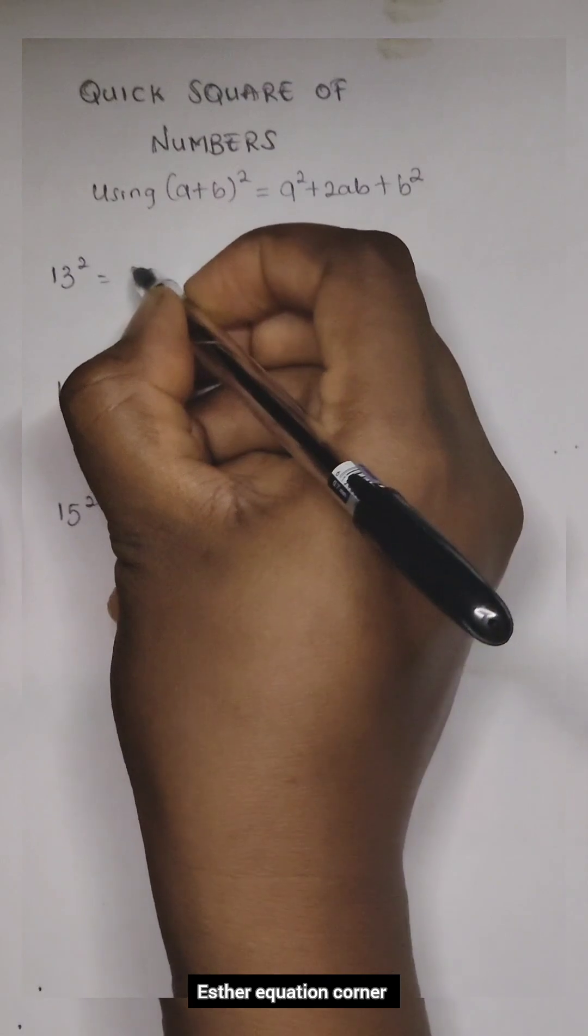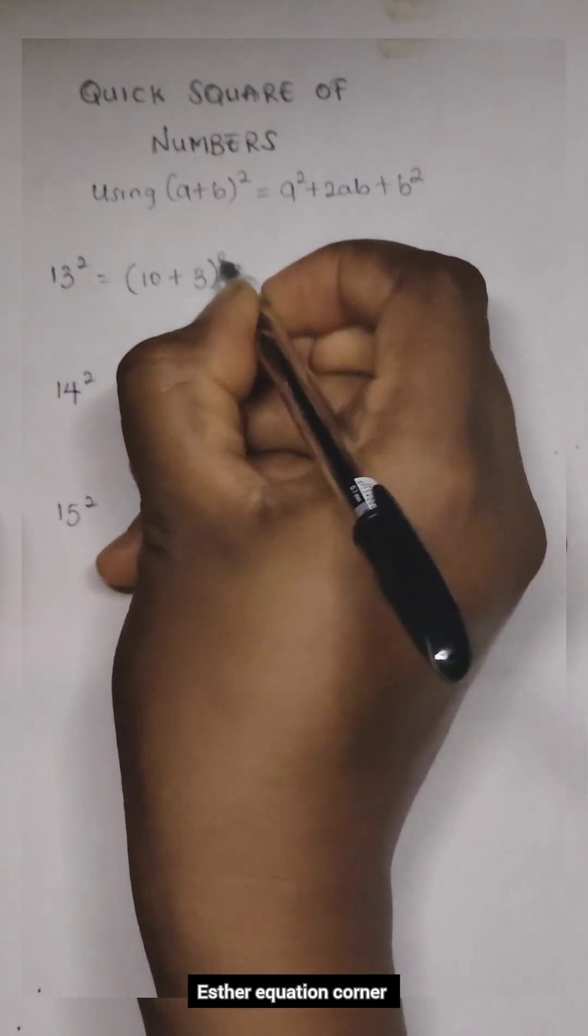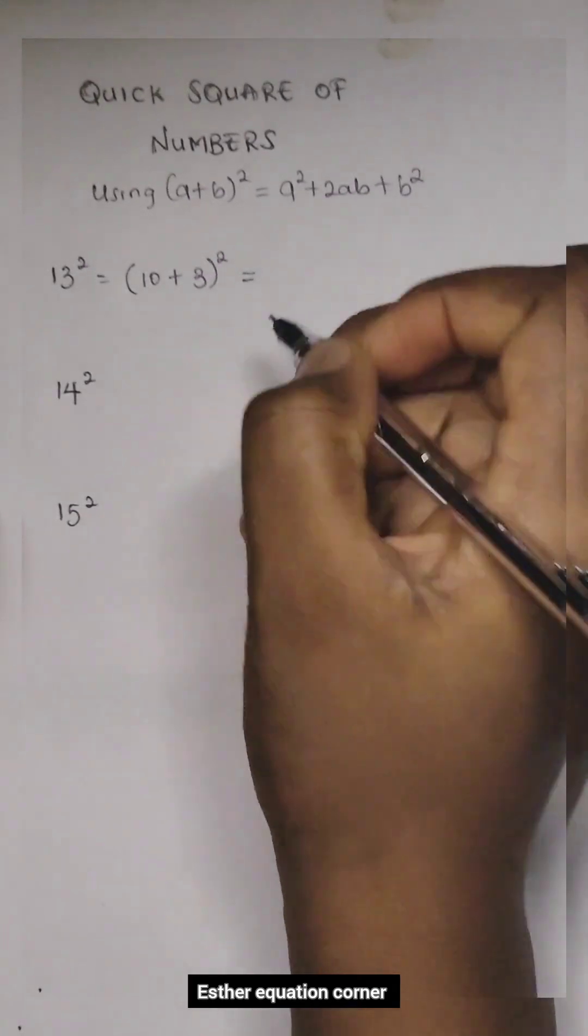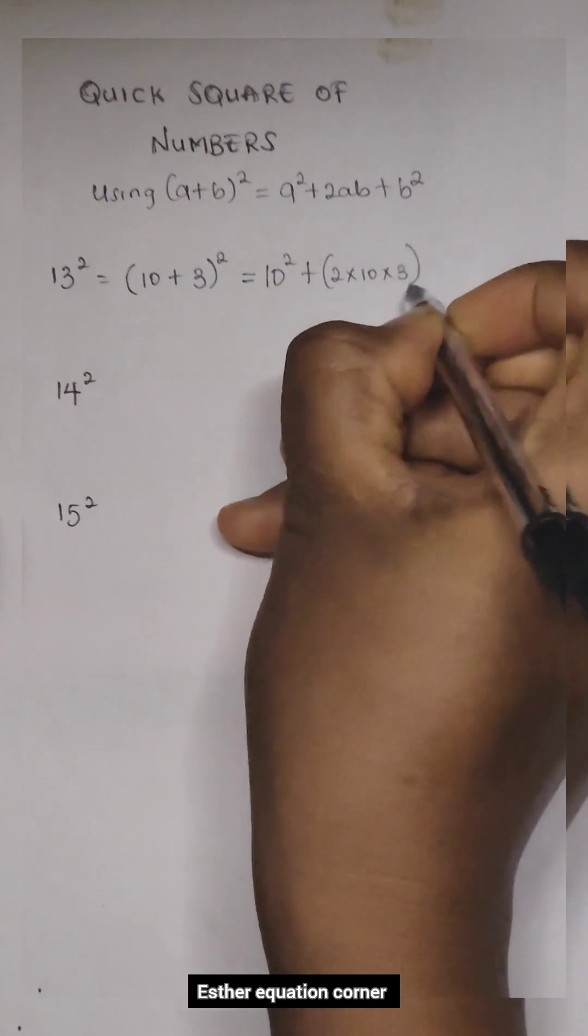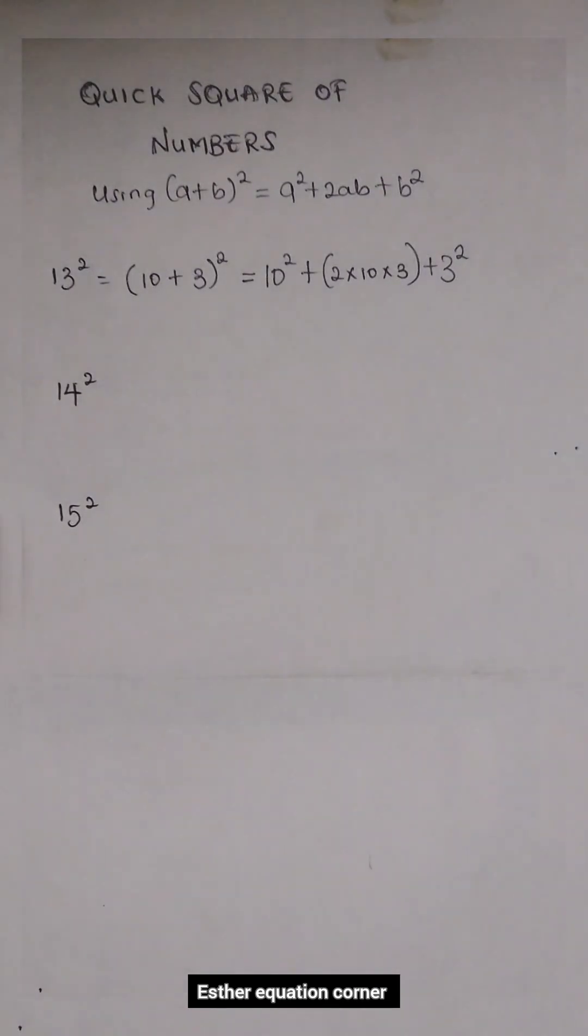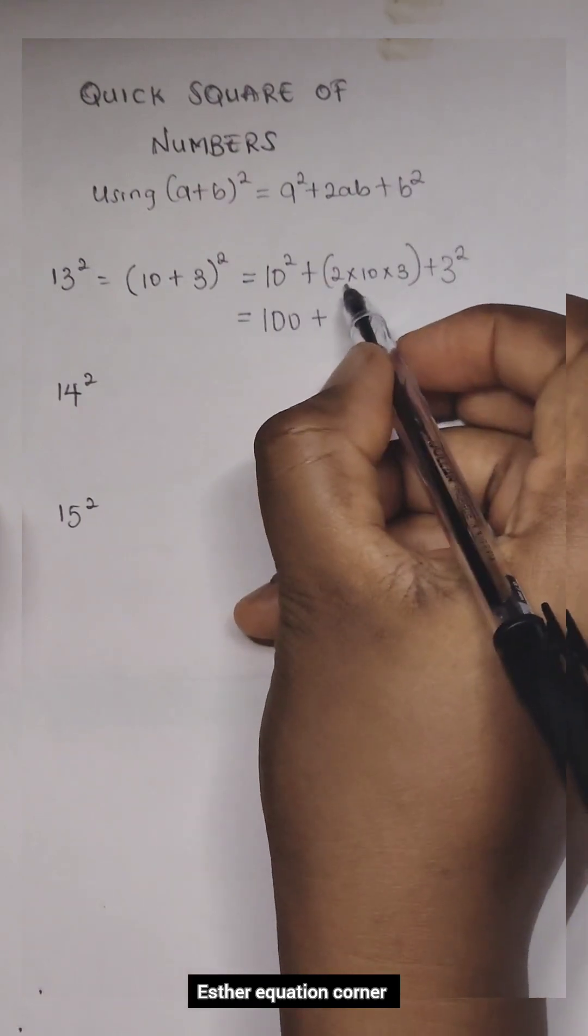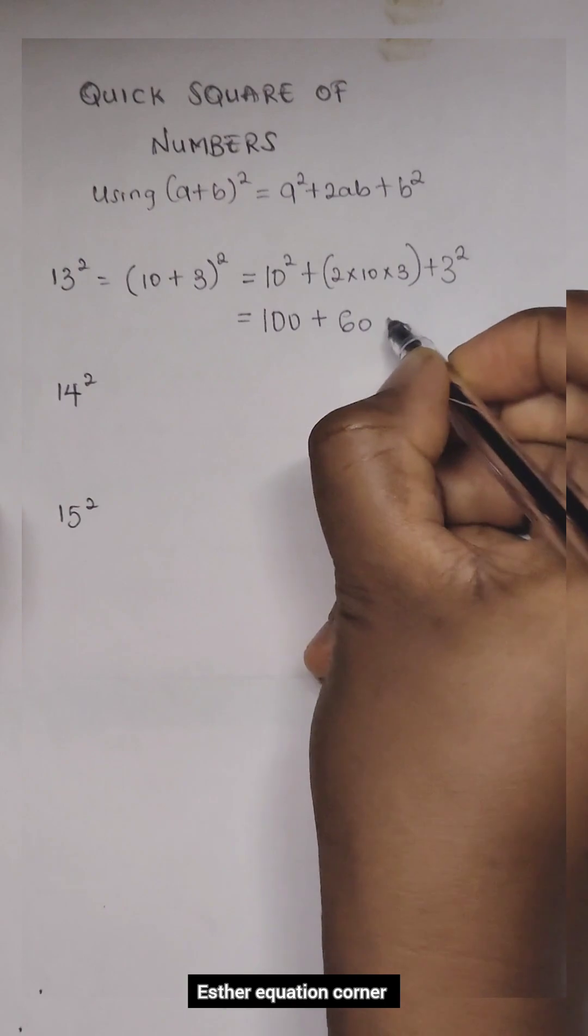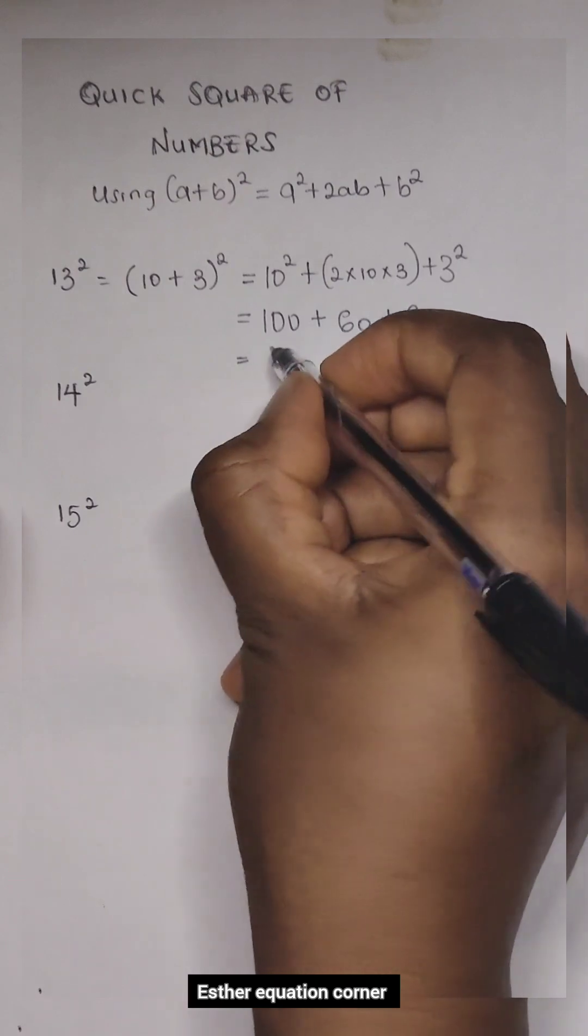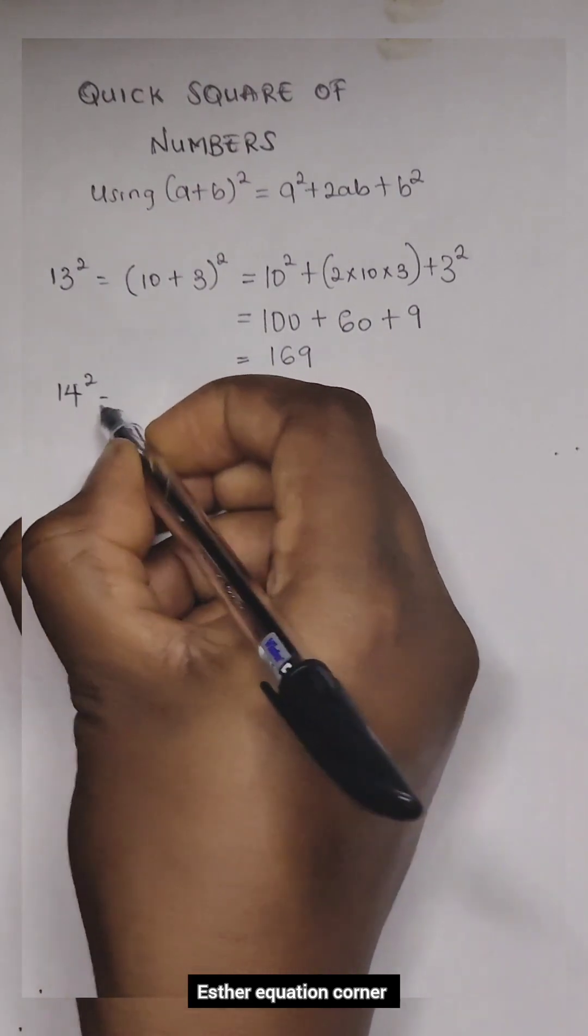13² is the same as (10 + 3)², which equals 10² + 2 times 10 times 3 + 3². This will give us 100 + 20 times 3, which is 60, plus 9, equal to 169.